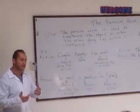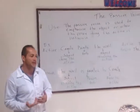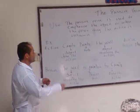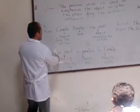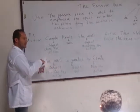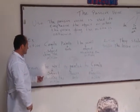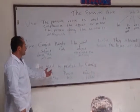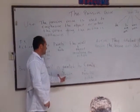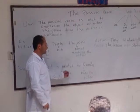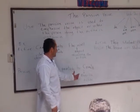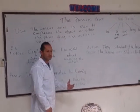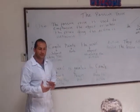Now we are going to change the active voice to passive voice. You need to write the object, which in this case becomes the subject receiving the action. The passive verb is "painted by Camilo," who is doing the action.